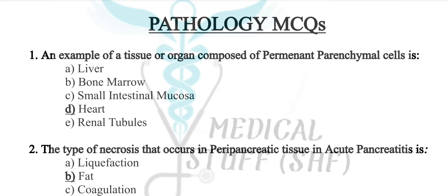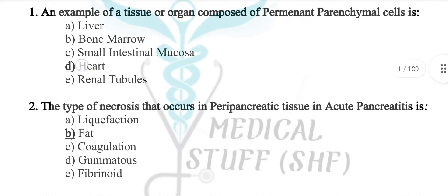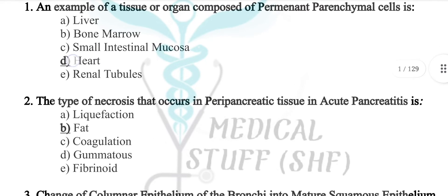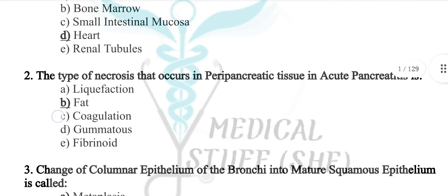An example of a tissue or organ composed of permanent parenchymal cells is the heart. The type of necrosis that occurs in pancreatic tissue in acute pancreatitis is fat necrosis.